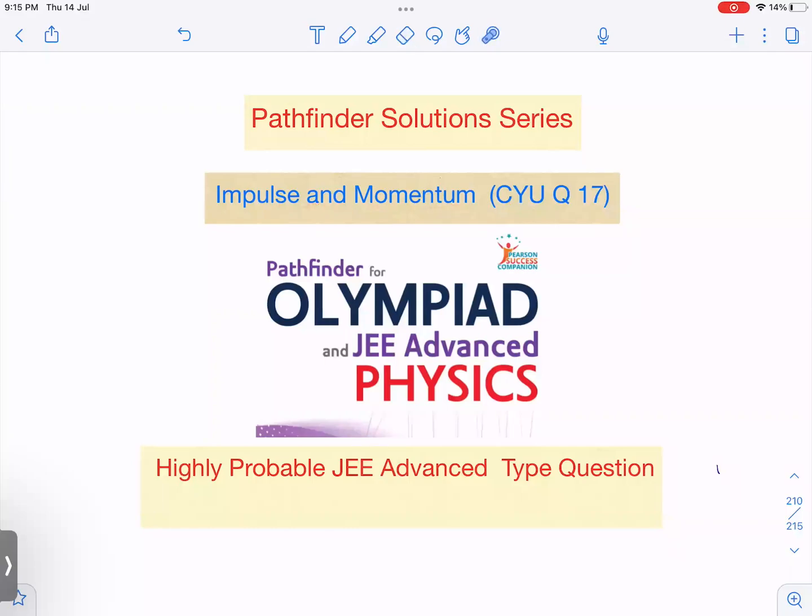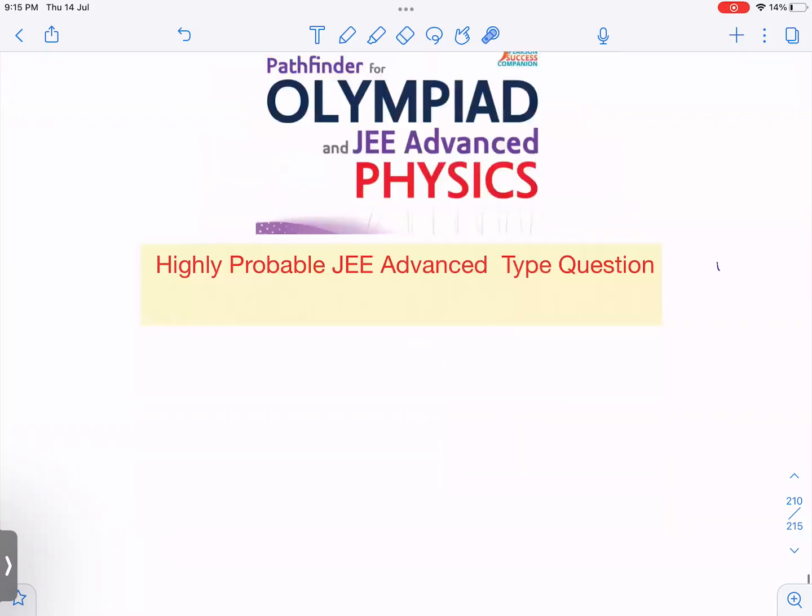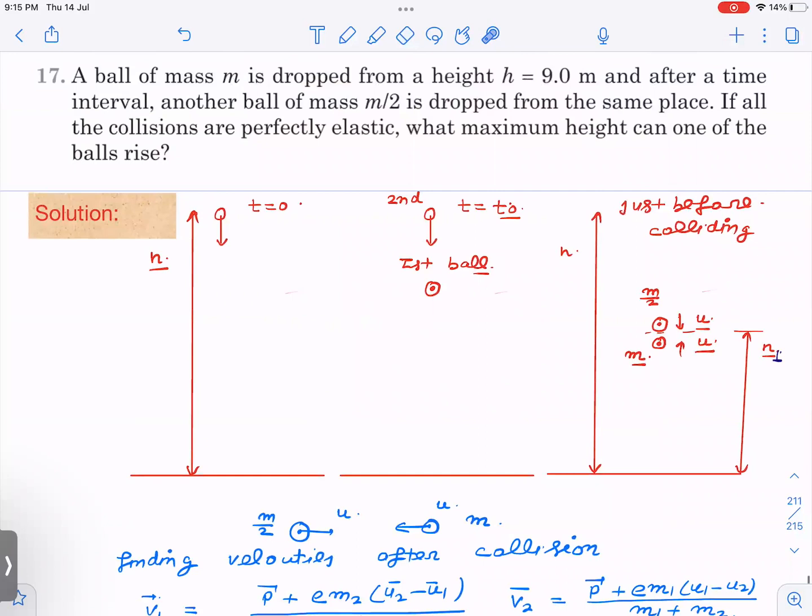This is impulse and momentum, check your understanding question number 17 from the book Pathfinder. So let us read the question and see how do we solve it. So there is a ball of mass m, it is dropped from